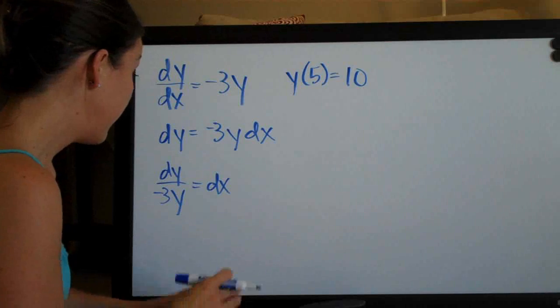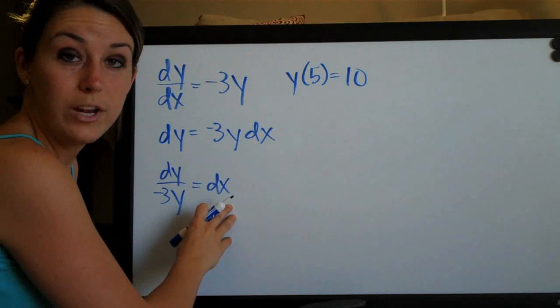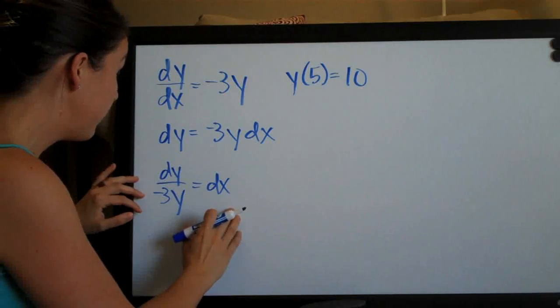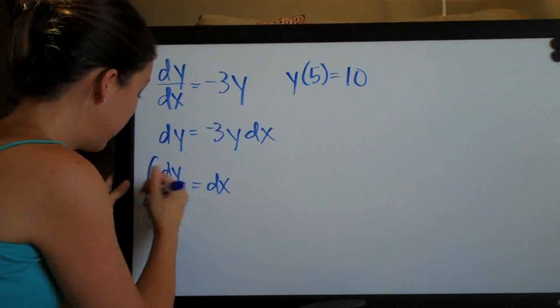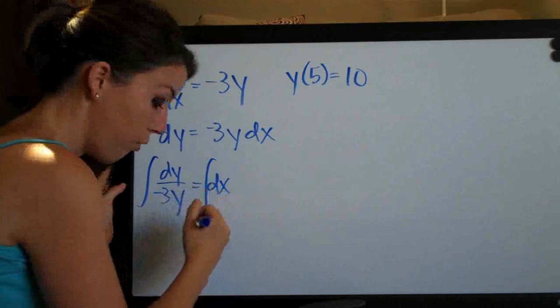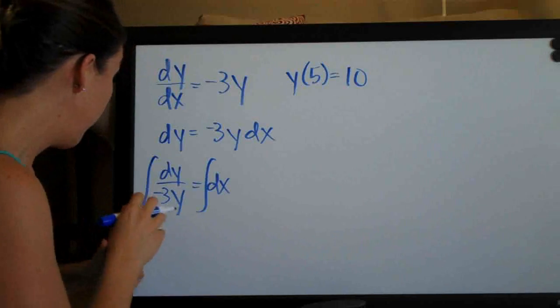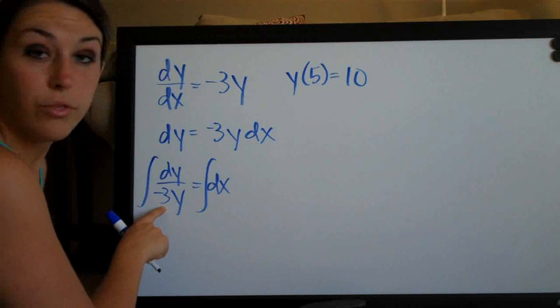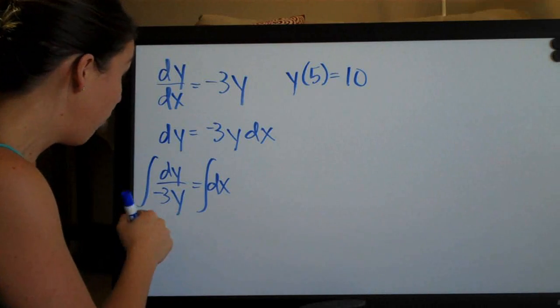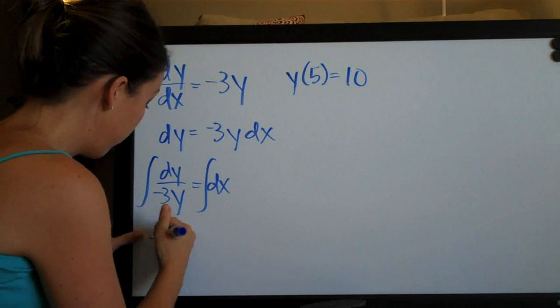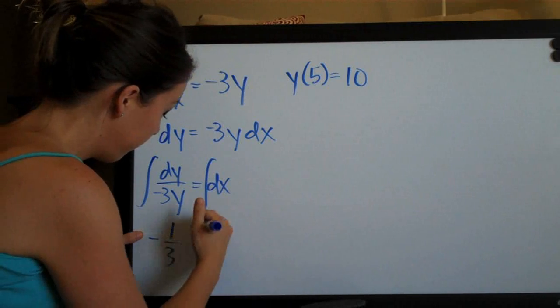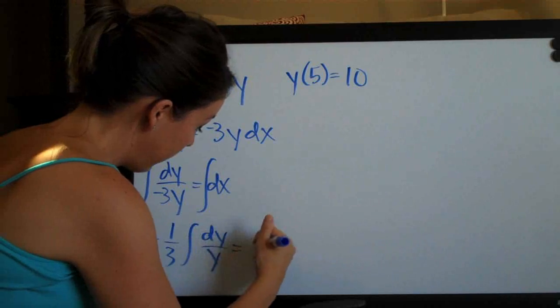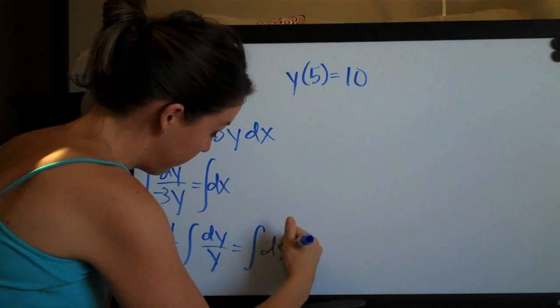So let's go ahead now. The second step in any differential equation problem is to integrate both sides once we've separated those variables. So we've got them separated and now we'll integrate both sides. Integrating, we have here a coefficient, negative 1/3, right? So we have this 3 on the bottom. We can pull that out in front of the integral. So we'll get negative 1/3 times the integral of dy/y equals the integral of dx.